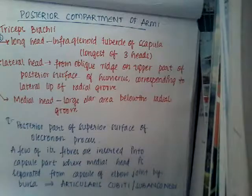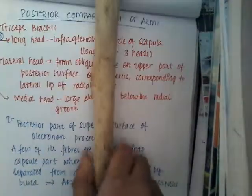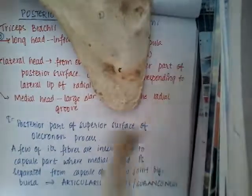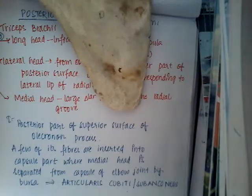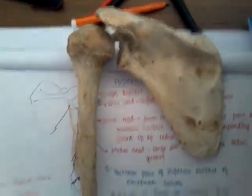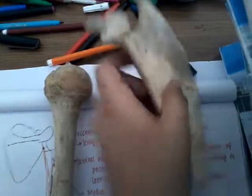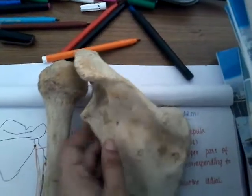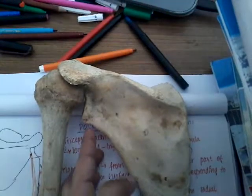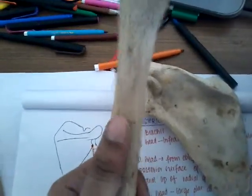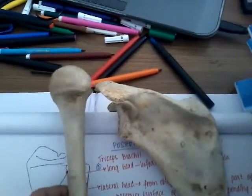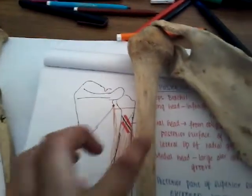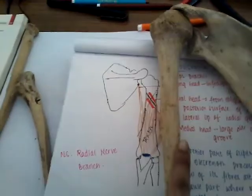Let me show you this on the bone so you will understand better. This is the humerus. The muscle starts from the infraglenoid tubercle — this is the glenoid fossa, this is the supraglenoid tubercle, and this is the infraglenoid tubercle. So the long head starts from the infraglenoid tubercle. The spiral groove is not very prominent on this bone, but it is approximately here. Assuming the spiral groove is here, the lateral head originates above the spiral groove, and the medial head originates below the spiral groove.